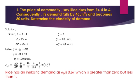The price of a commodity rises from rupees 4 to rupees 6. Since there is a rise in price, the demand of the commodity will fall by 40 units and has become 80 units. The original price is rupees 4, the new price is rupees 6, so the change in price is rupees 2.